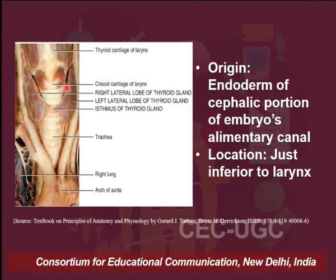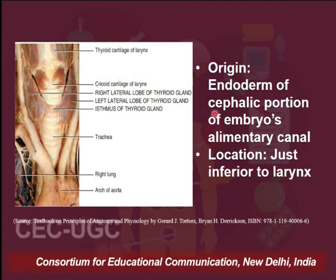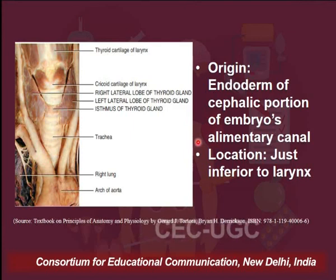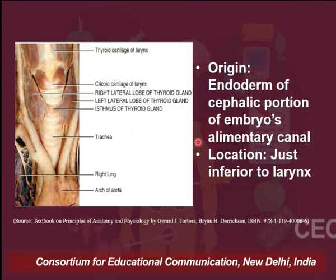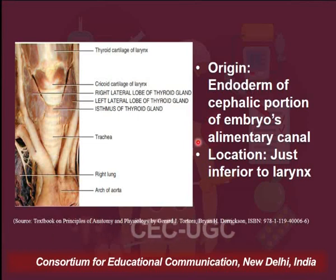If you talk about the origin of this gland, it is derived from the endoderm of the cephalic portion of the embryo's alimentary canal. So at the embryonic stage, the endoderm of the cephalic portion of the alimentary canal gives rise to this thyroid gland.